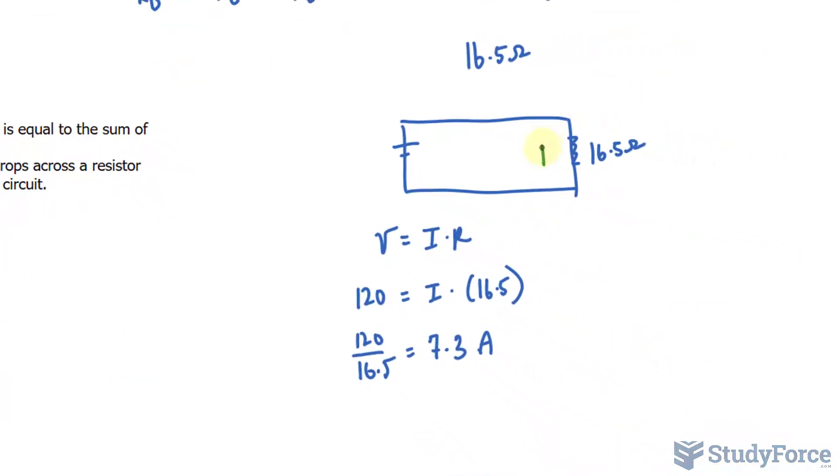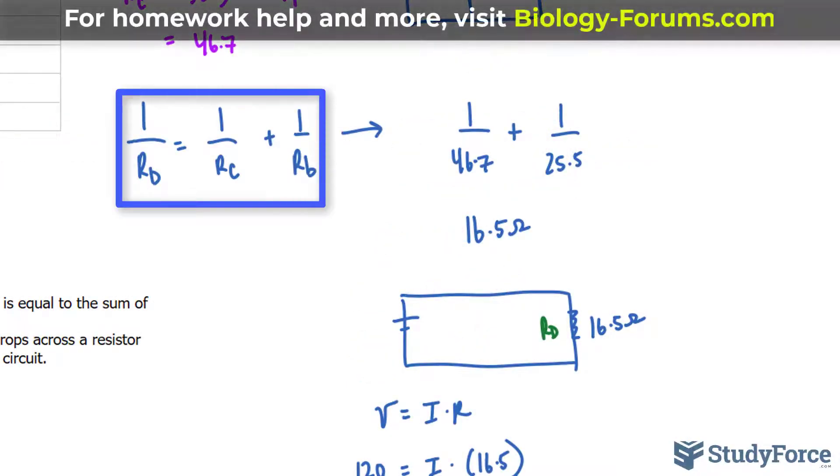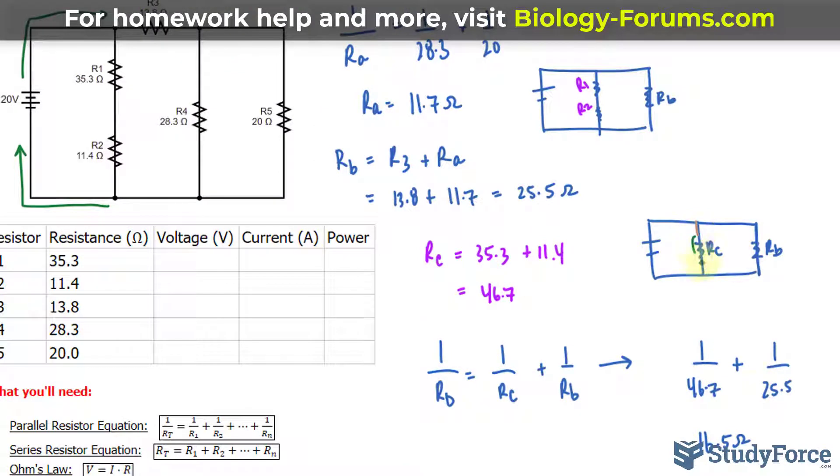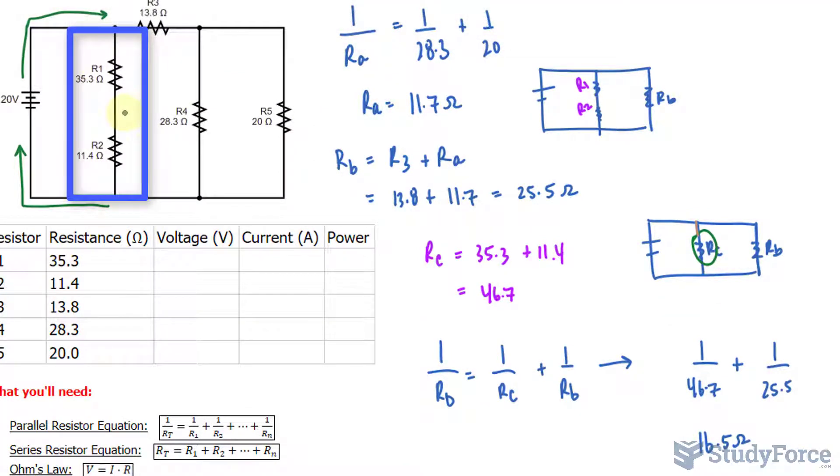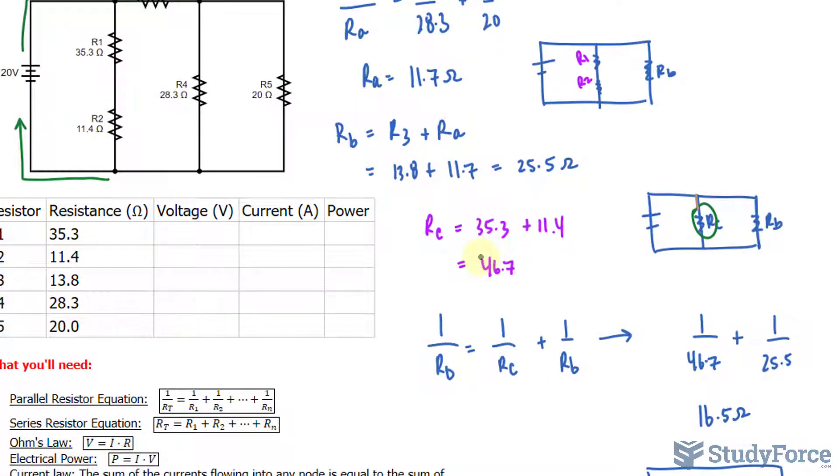This resistor we called R sub D, and it was a combination of RC and RB. RC is this part right here and it is a combination of R1 and R2.